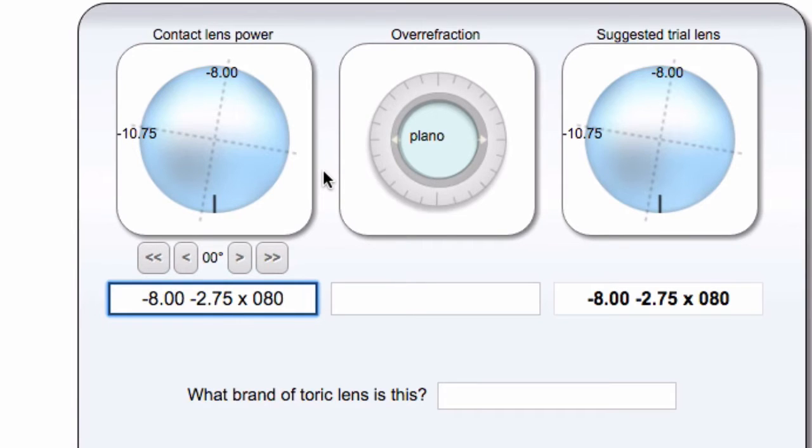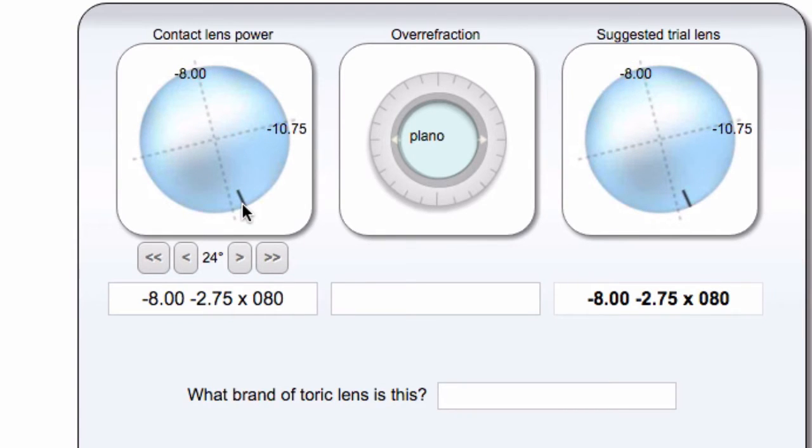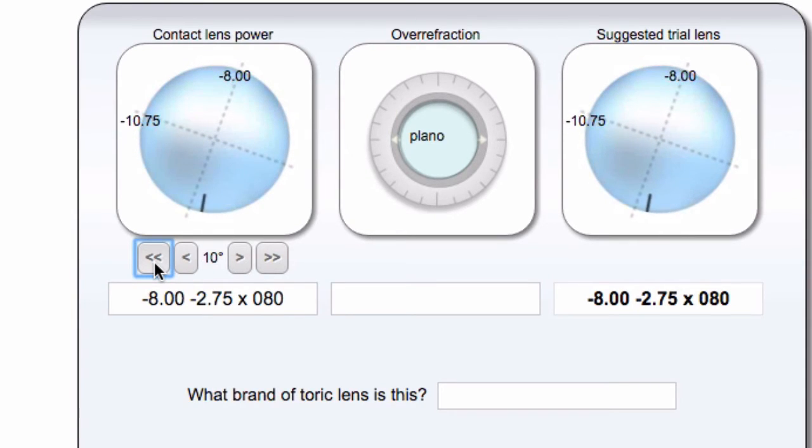You can kind of visualize how the powers line up on the lens, and then to denote the rotation, you can just click on the lens. That's one way to do it, and it will move to where your rotation is, and sometimes that's a little bit easier than saying it's 10 degrees or 20 degrees, because sometimes we're not the best judges of that. You can also click these arrows to adjust it by one degree increments, or these double arrows will adjust it by 10 degree increments, and you can just put the lens where it was sitting on the patient's eye.